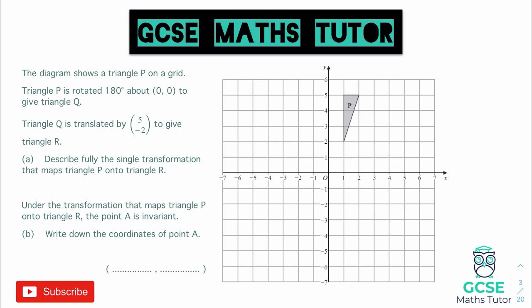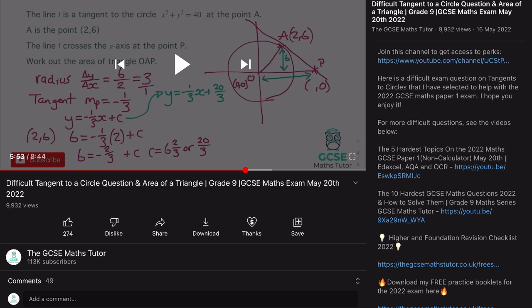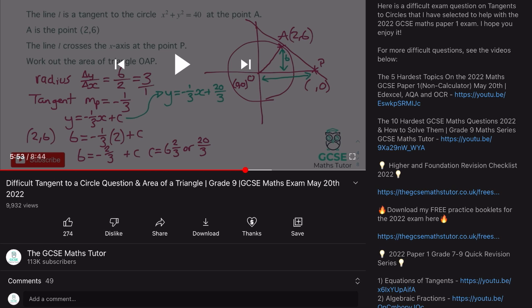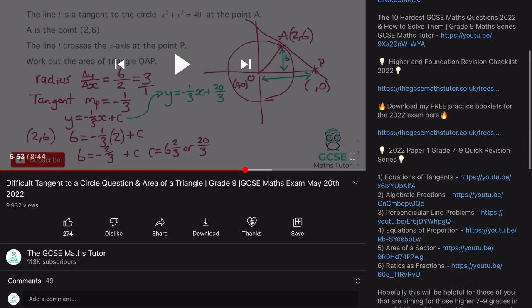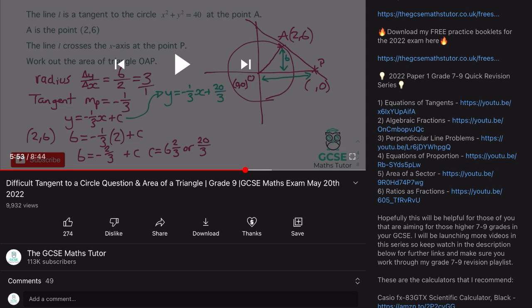Before we do that, I'm just going to show you where in the video you can find more, because with transformations you have translations, reflections, rotations, and enlargements. Within that, you've also got negative and fractional enlargements and this concept of invariant points. I'm going to link all of those lessons in the description. When you're on one of these videos and you click into the description, you'll see everything listed — hard questions to try, checklists and practice papers that you can download, and all the questions and other videos within this series.